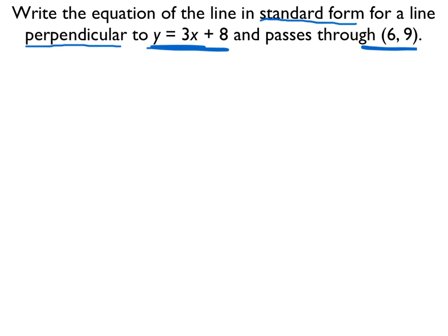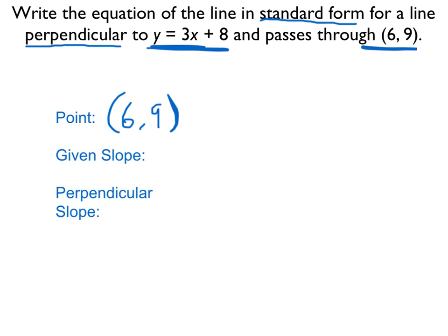Let's figure out some information so that we can get it into point-slope form, which we can then adjust into standard form. We know the point that this line passes through is (6, 9). The slope of the given line is 3, since we have a line in slope-intercept form.